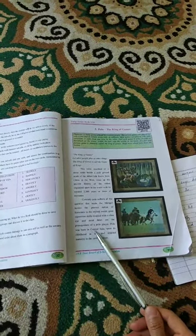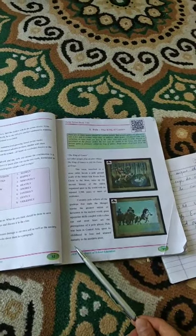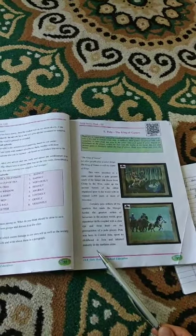Polo was born in Central Asia, spent its childhood in Iran and attained maturity in the northern areas. That was the model reading. Now we'll discuss it.